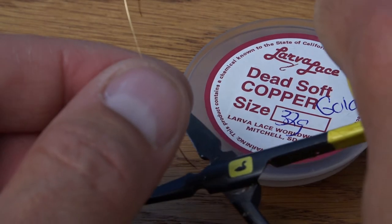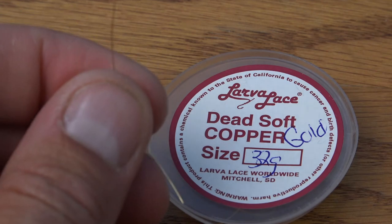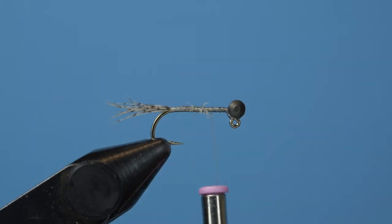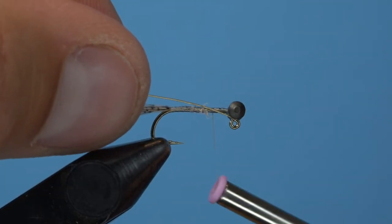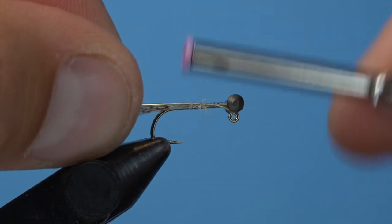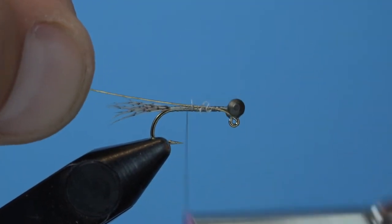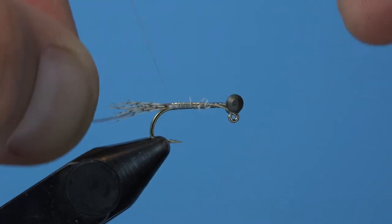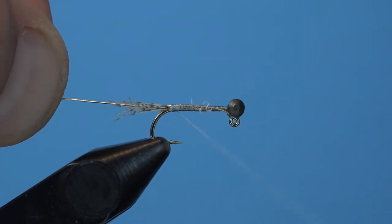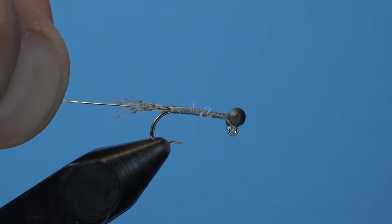Next, go ahead and trim a small piece of gold wire from its convenient little holding container. The Larvalace Soft Copper Wire Containers keep all of your wire in check, not allowing for the entire spool to bail out of control like some products. Capture the wire and secure it to the hook shank, ending with your thread at the back of the hook.